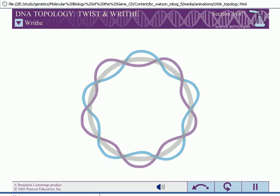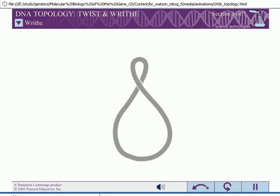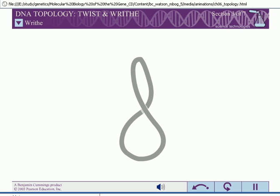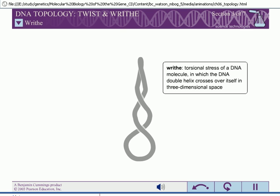However, CCC DNA does not generally lie in a flat plane. Instead, the DNA double helix usually crosses over itself in three-dimensional space, often repeatedly. This torsional distortion is called writhe.